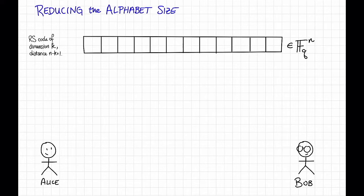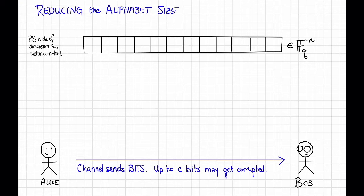Unfortunately, the channel between Alice and Bob sends bits. That is, the channel doesn't know about Fq,